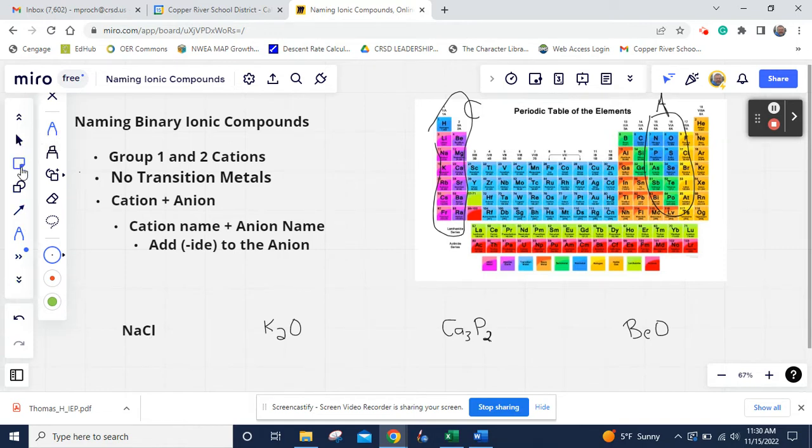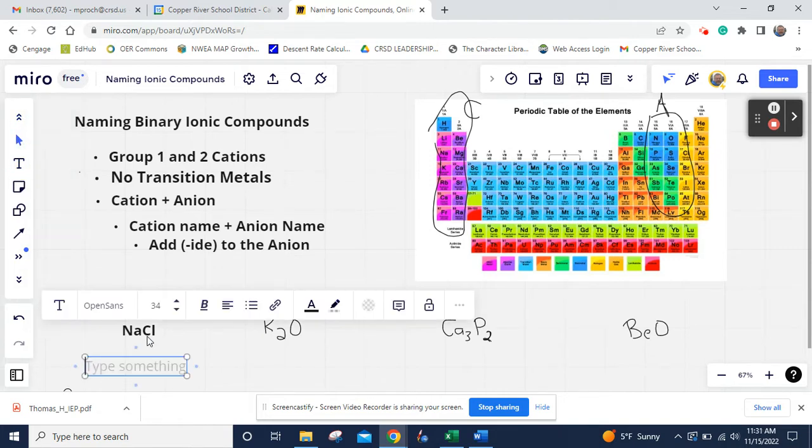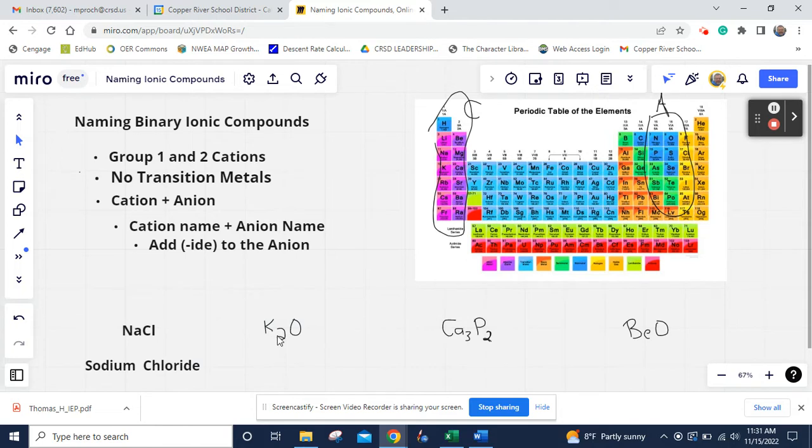So if we look at this one right here, I'm going to type these in. If we're going to name this one, NaCl, we look at the name of the first element, the cation. It's sodium. Then we have the second one, chlorine. Then we take and we add IDE. We take the ending of chlorine off and we add IDE. So NaCl is sodium chloride.